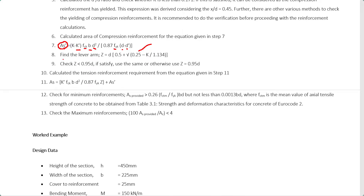Then you have to calculate the main reinforcement — the main tension reinforcement (sagging or hogging depending on the section). For that, you first have to calculate the lever arm Z. The lever arm can be calculated from the standard equation. When X/D is considered as 0.45, you can calculate Z. You can also use the simplified approach Z = 0.82D.